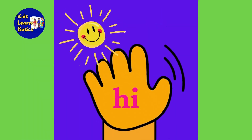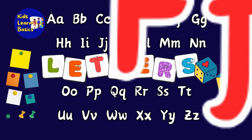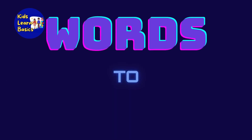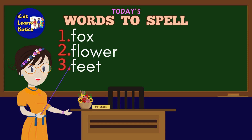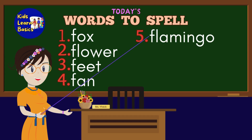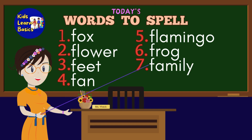Hi kids! Let's spell some words starting with F. Here are the words: Fox, Flower, Feet, Fan, Flamingo, Frog, Family, Fairy. We have 8 words to spell.